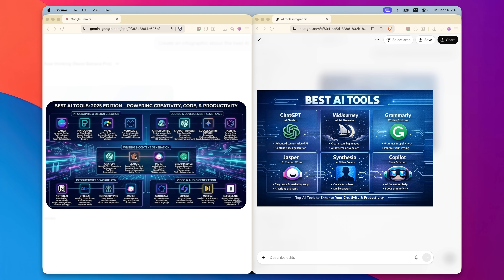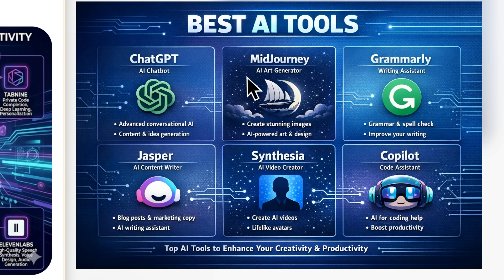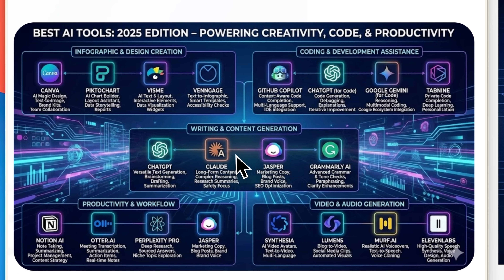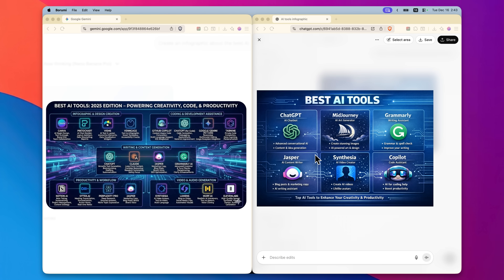I wanted to push the boundaries of text on images — not just a few words, but a full infographic. I told both models to create an infographic covering the best AI tools. The ChatGPT one is fine — a little simple with just six items. But when you compare it to the Gemini one, which has a ton more detail, breaks it into five sections with the best tool in each, and has a lot more words — Gemini's just better.